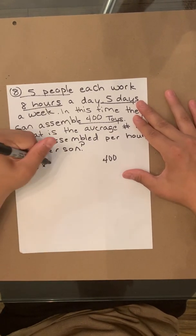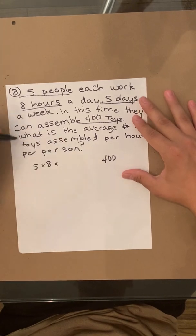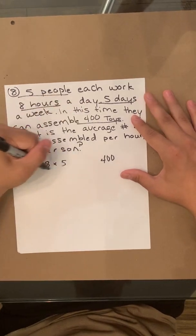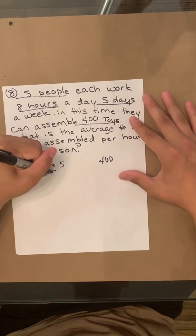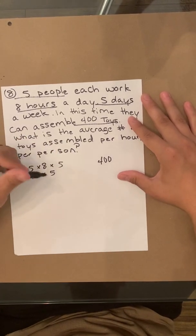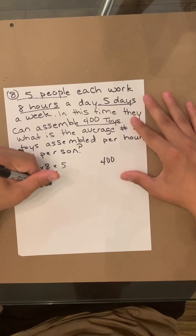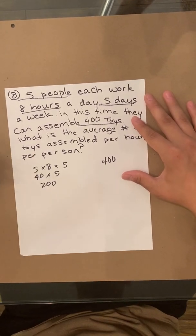eight times five. So five times eight, that's 40. Now 40 times five, that's 200. So 200 hours is how much we've accumulated.